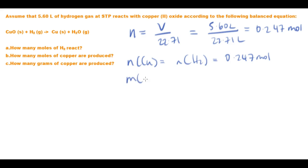And in order to find out the mass of our copper, we just multiply the number of moles of copper by the molar mass of copper, which is 0.247 moles multiplied by 63.55 grams per mole.